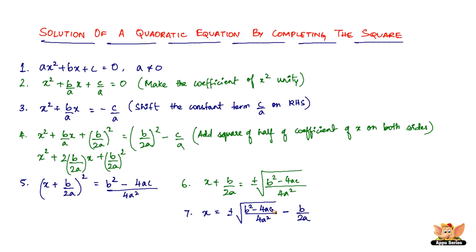So let me quickly run you through the whole algorithm to solve a quadratic equation by completing the square. First, get the quadratic equation in the form ax squared plus bx plus c equals 0. Then divide the entire equation by the coefficient of x squared to make its coefficient unity or 1. Next, shift c by a to the right-hand side, then add b by 2a whole squared on both sides, so that you end up with a perfect square of the form x plus b by 2a whole squared.